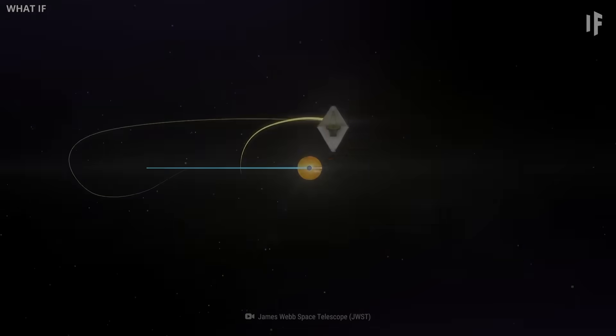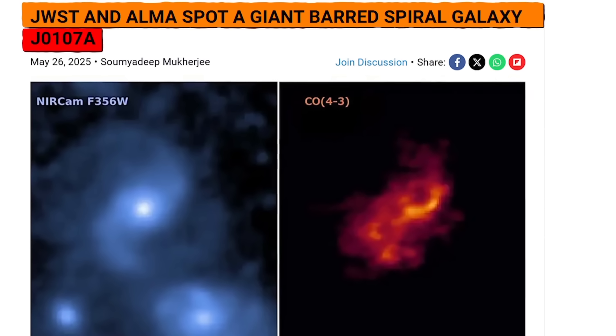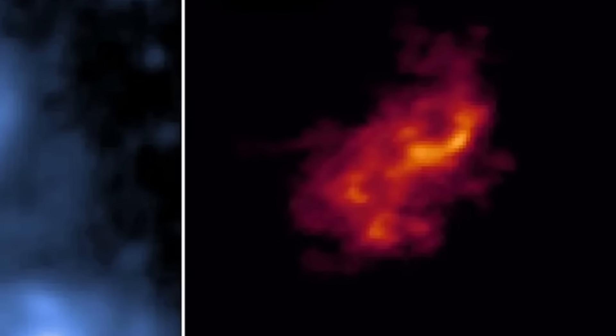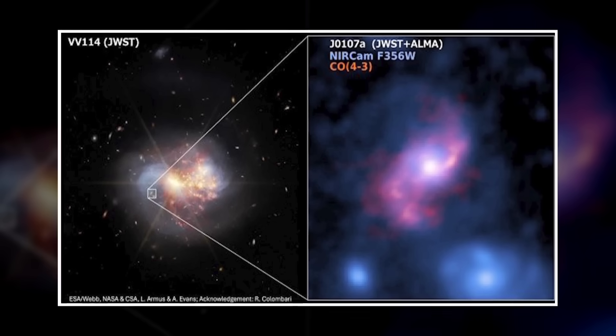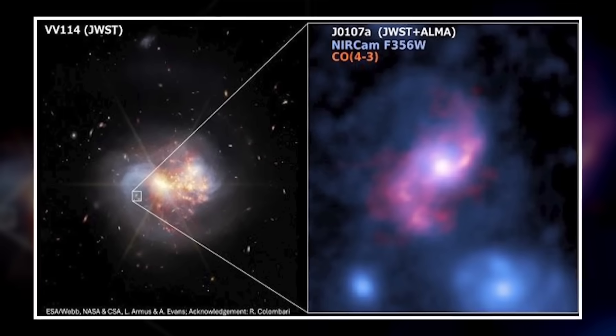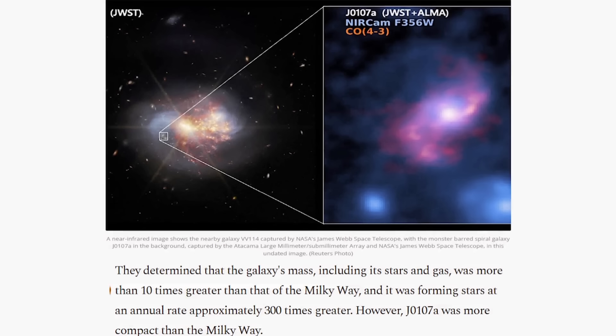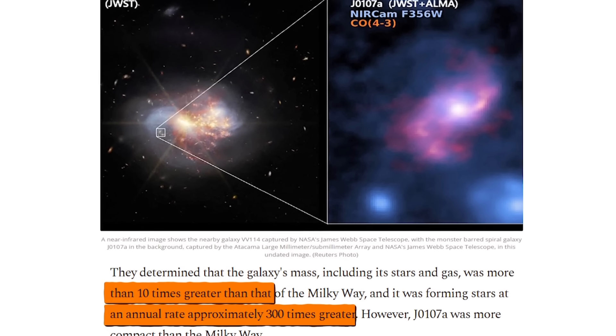But now, the James Webb Space Telescope has uncovered something even more worrying. This latest discovery is not just surprising, it's deeply unsettling for astronomy. Recently, astronomers have uncovered a colossal barred spiral galaxy named J0107a, dating back 11.1 billion years, which is just one-fifth the current age of the universe. Using the ALMA Observatory and NASA's James Webb Space Telescope, researchers discovered that J0107a has a well-defined spiral structure with a central bar much like our Milky Way. However, it's over 10 times more massive and is forming stars at an astonishing rate 300 times faster than our galaxy.